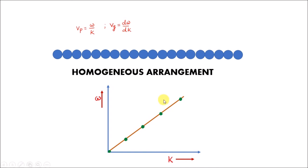So all waves, irrespective of frequency, will travel with the same velocity in the solid. If the velocity of a wave in a medium is constant irrespective of its wavelength or wave number, then the refractive index of the solid is a constant and is not a function of the wave. Such a medium is called a non-dispersive medium. Air is an example of a non-dispersive medium. We want to know whether a solid, being an inhomogeneous medium, is also non-dispersive or dispersive, and if dispersive, what kind of relation the wave vectors have with the wave frequency within the solid.